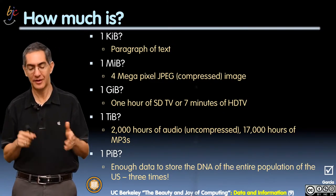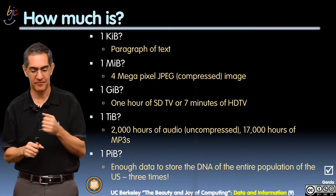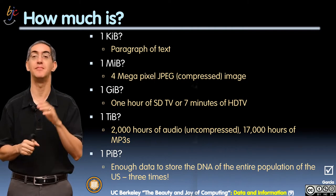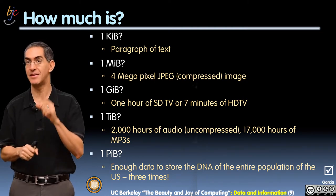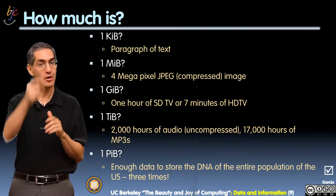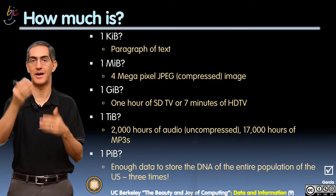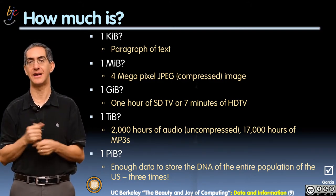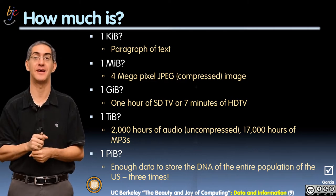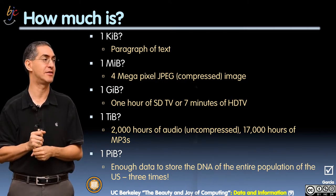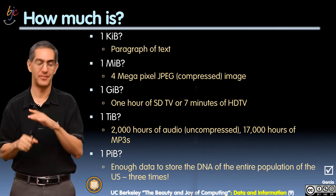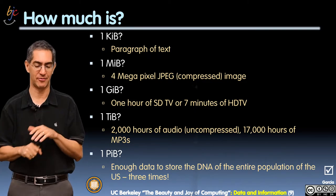A gibibyte — now we're talking about video. An hour of SD TV, or seven minutes of HDTV, is a gibibyte. When we do our recordings, we record them on HD and we get about 12 gibibytes an hour. It's about 12 gibibytes an hour for 1080p HD. So one gibibyte is about a twelfth of that, roughly.